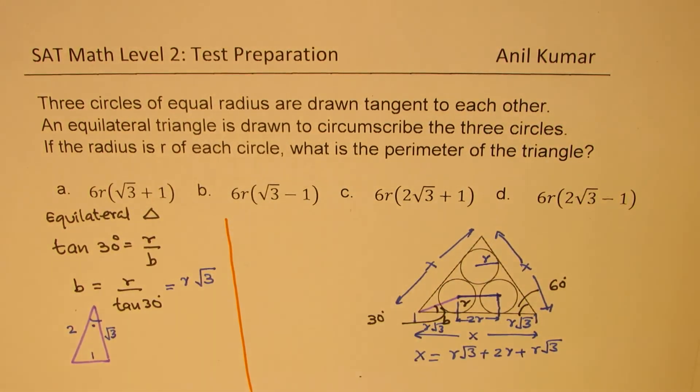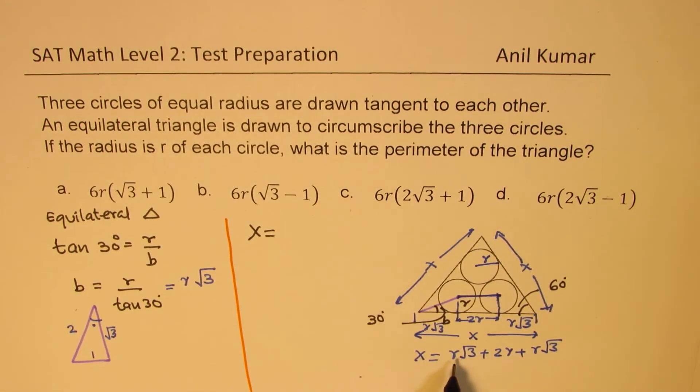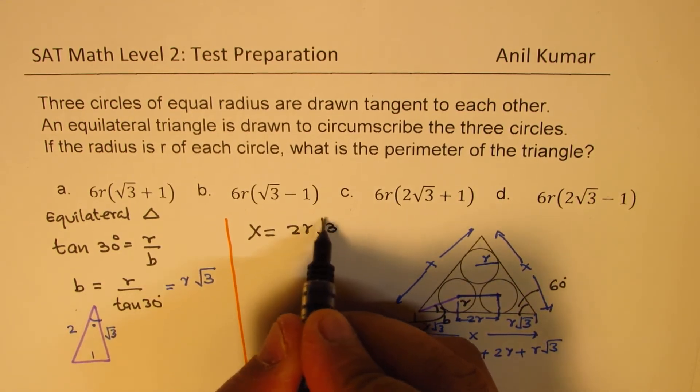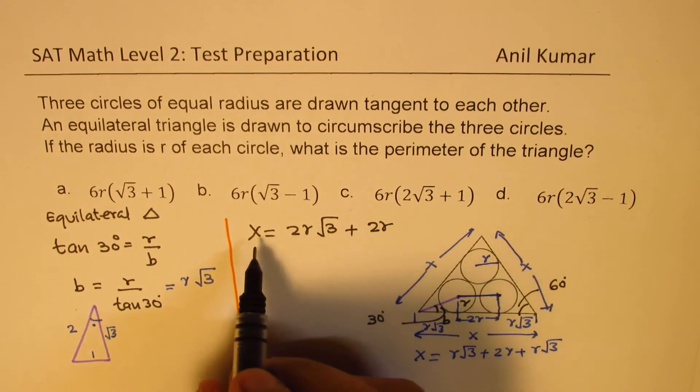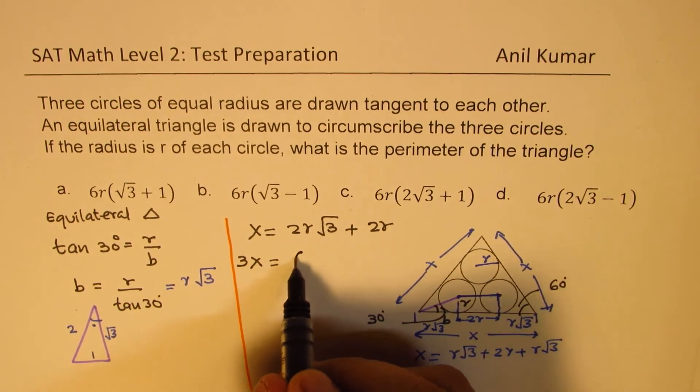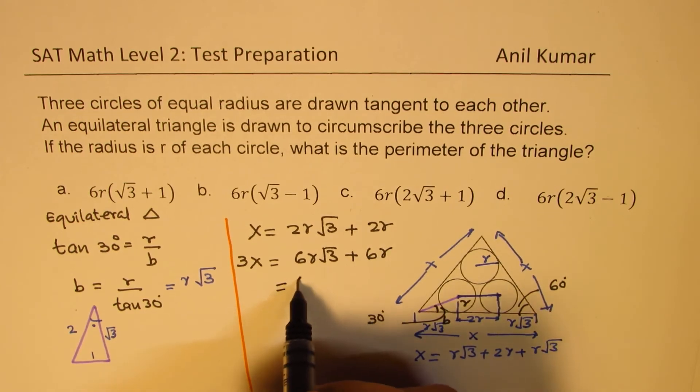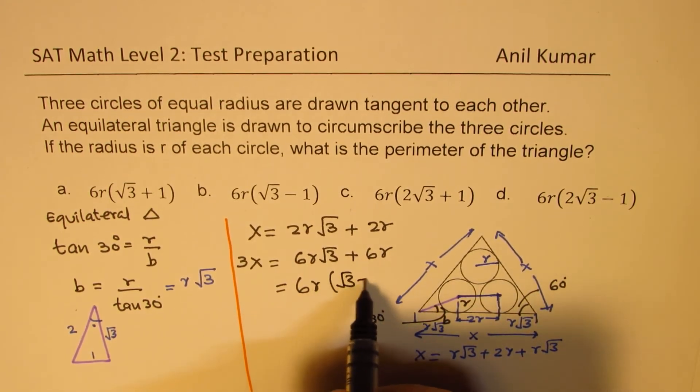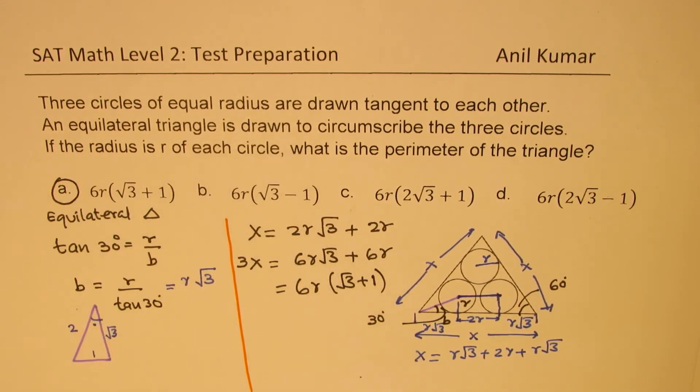So now when we know the value of X, we'll multiply this by 3 to get our answer. So the value of X for us is R plus R, 2R square root 3, plus 2R. So now 3X will be how much? Multiply this by 3. So we get 6R square root 3 plus 6R. Taking 6 as common, also R as common, we get square root of 3 plus 1. And that is the answer for us, A.